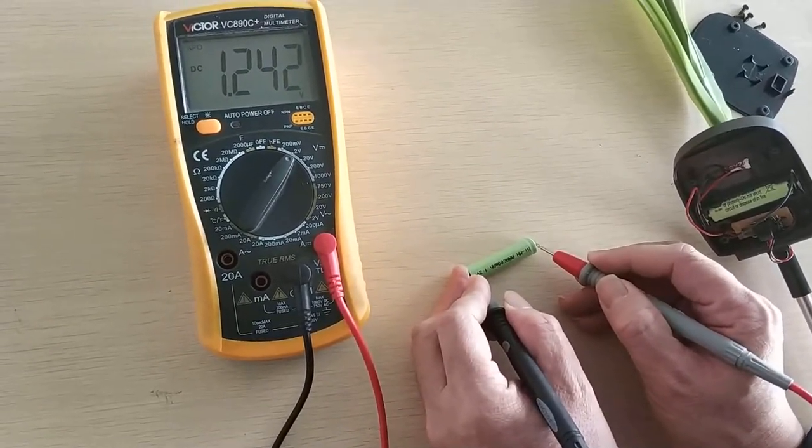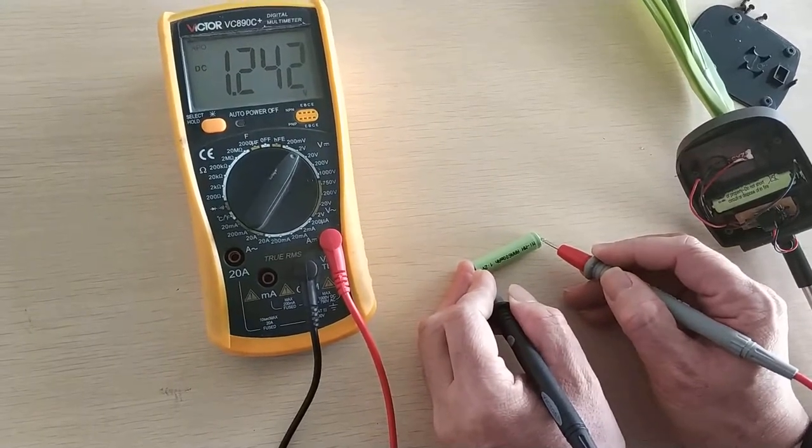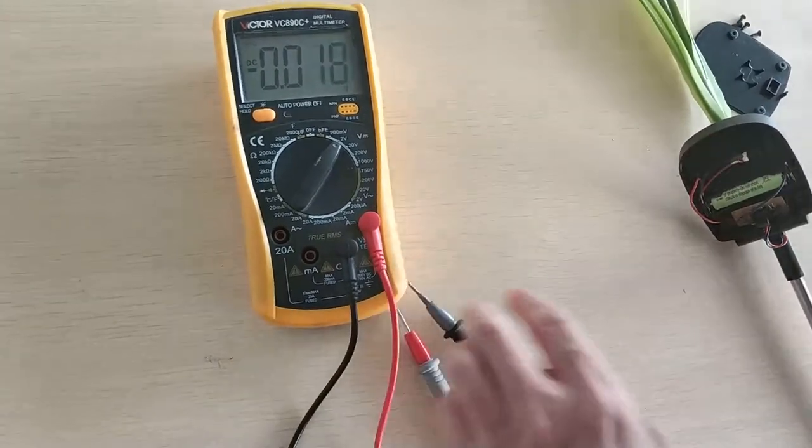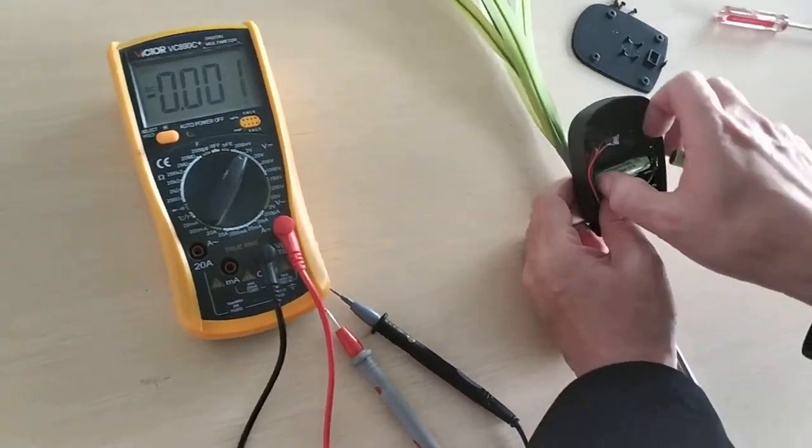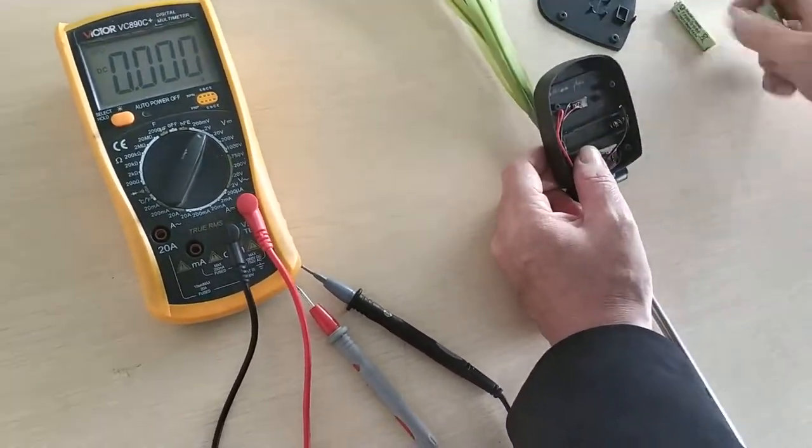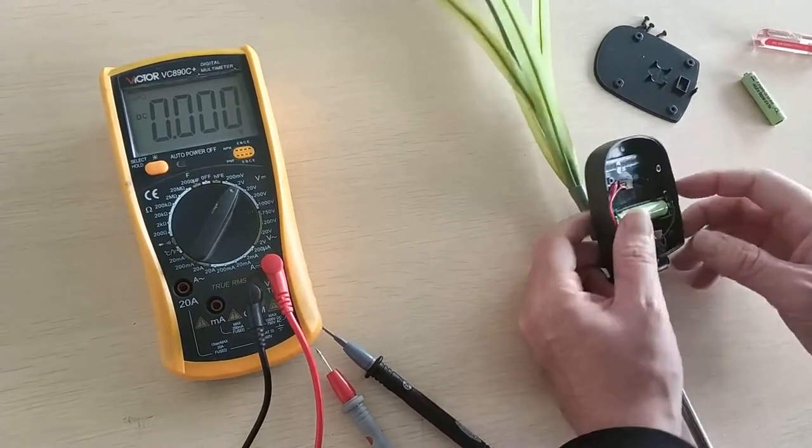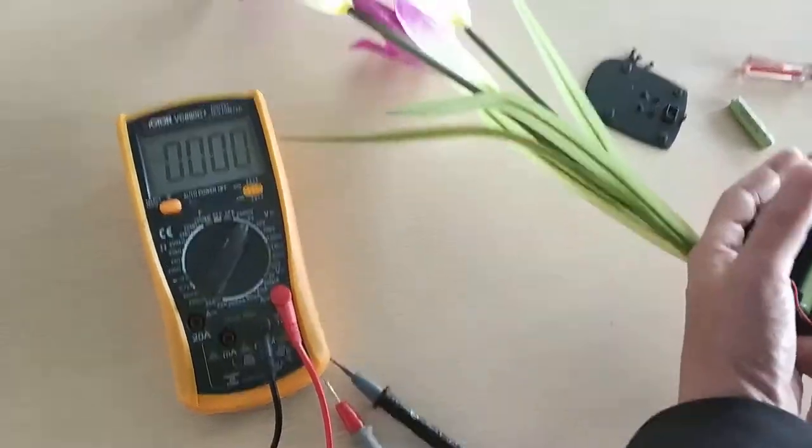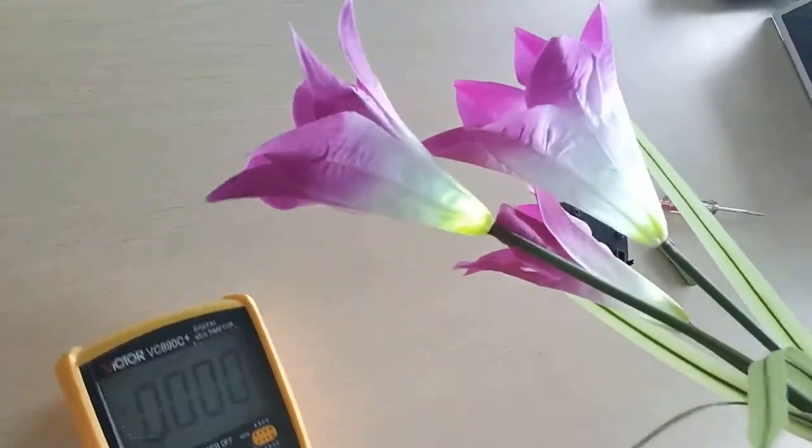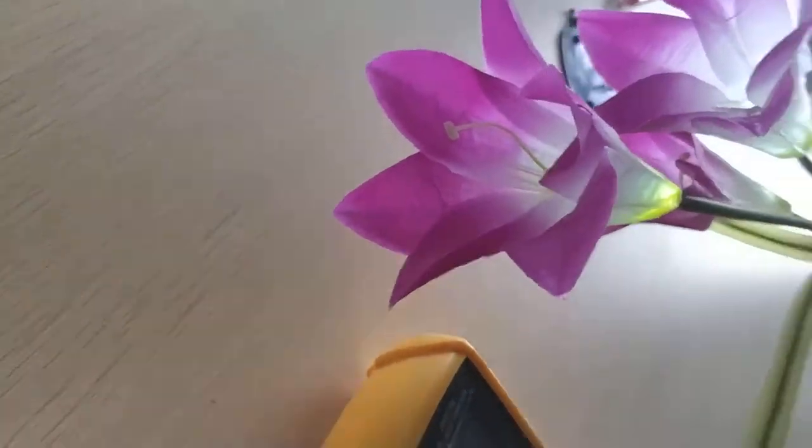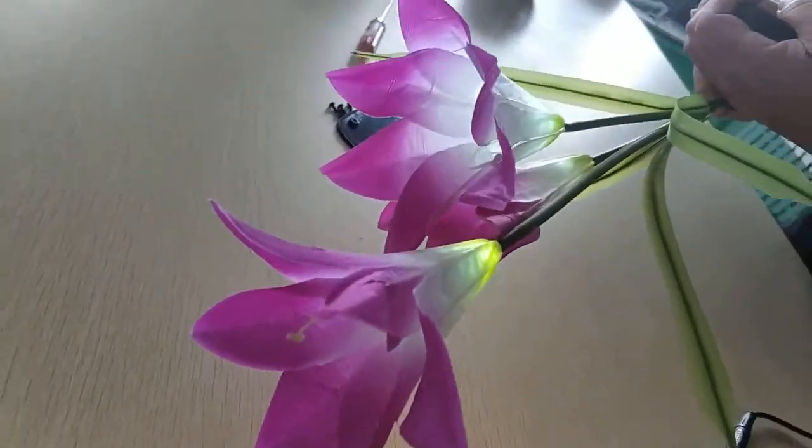This battery is 1.2 volts. It's fully charged, so let's check. Change the battery and then we check if it's on. You can see the LED is on, so the LED is no problem.